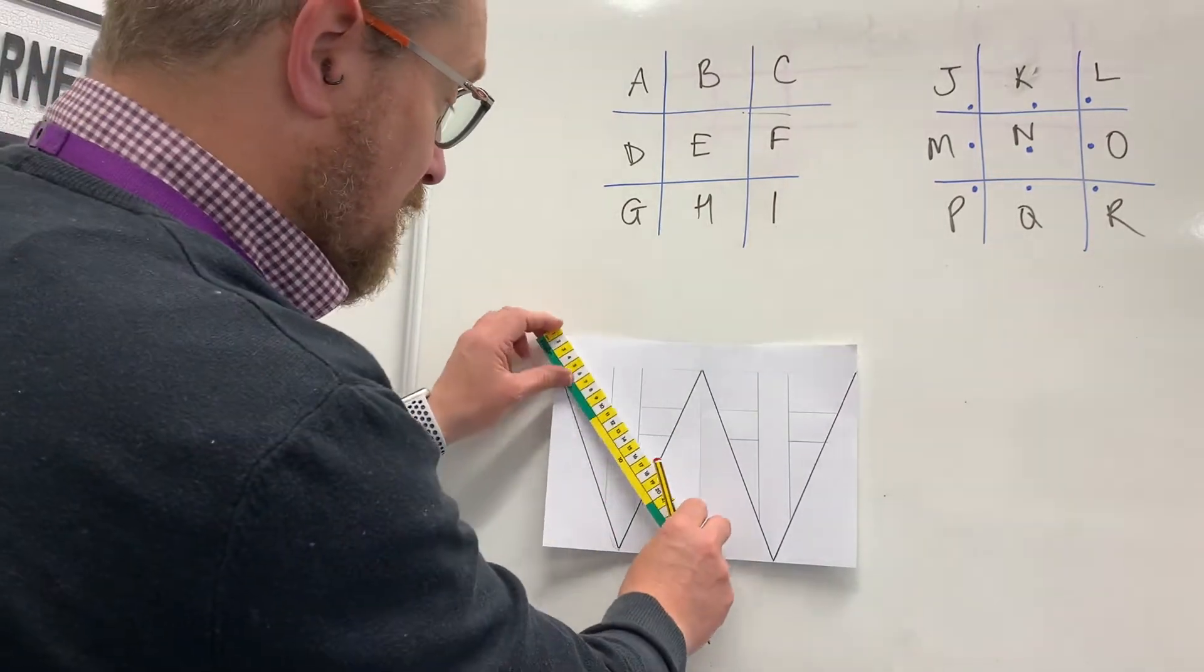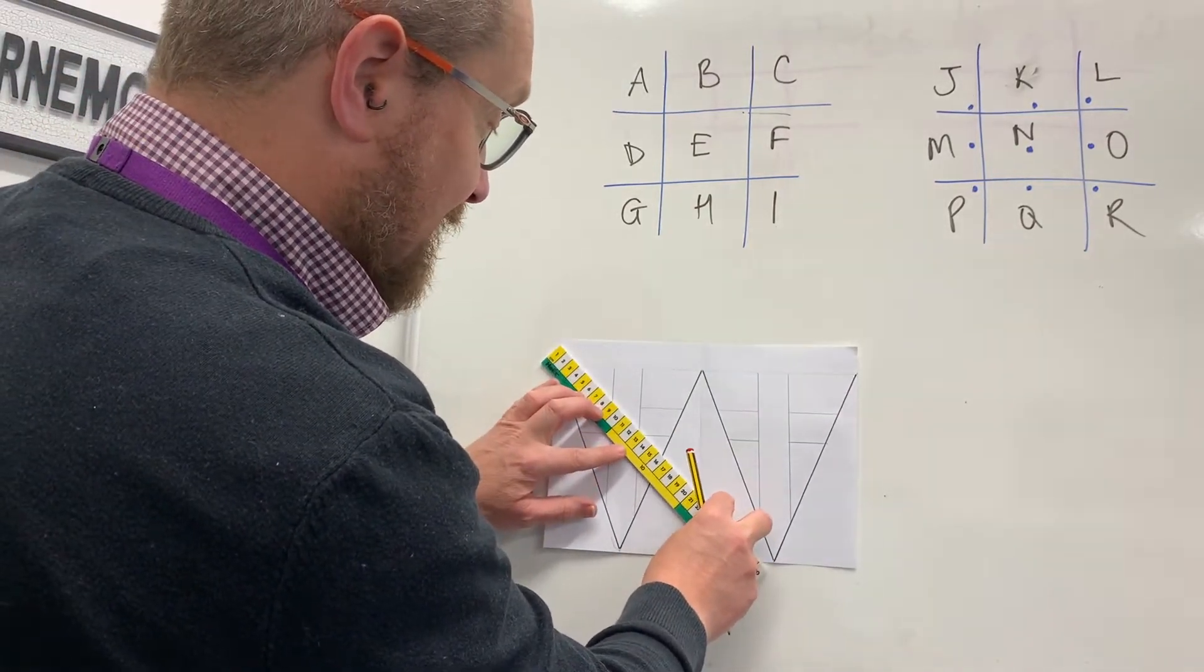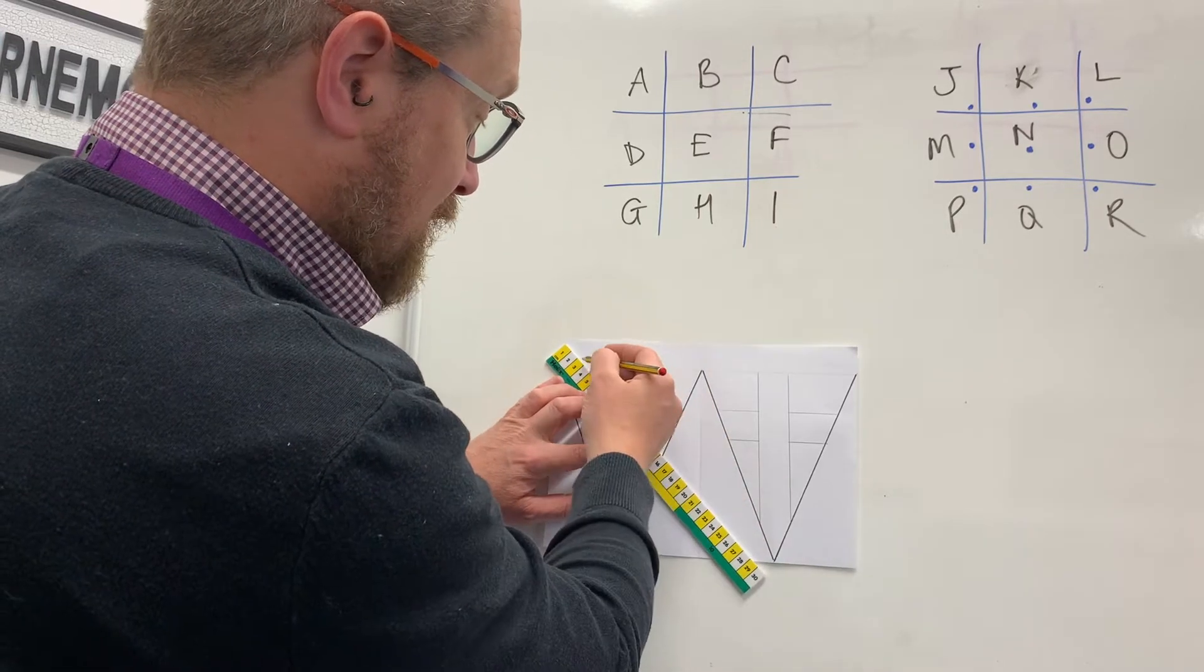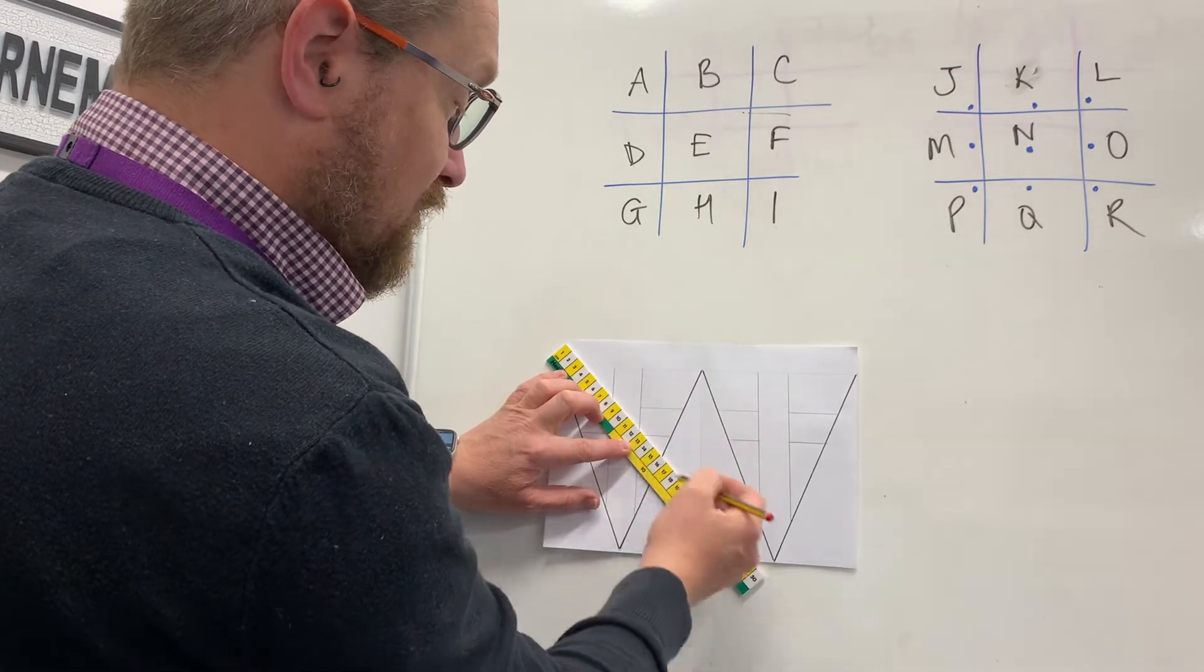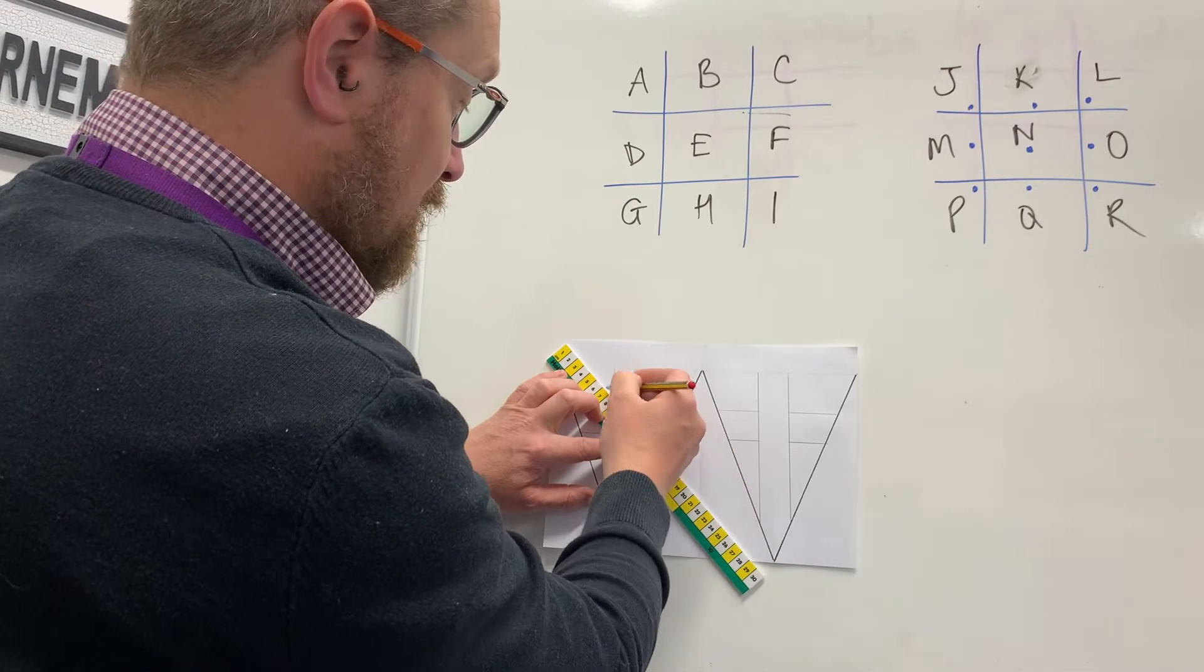Now the other thing that my Union Jack bunting has is it has some that goes across like this. So I'm going to put this on diagonally and I'm going to draw.